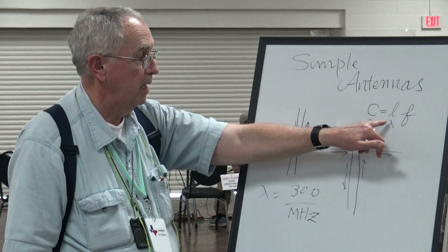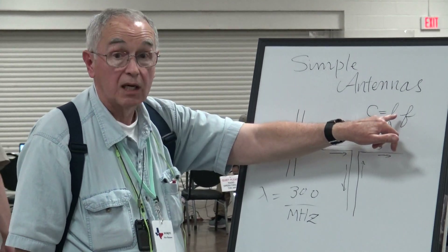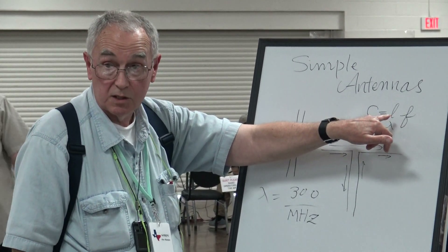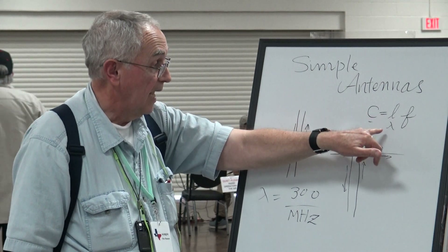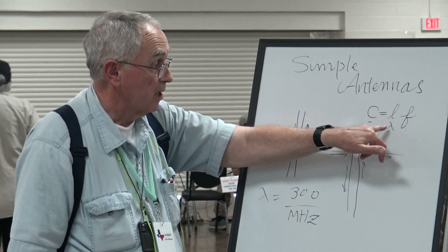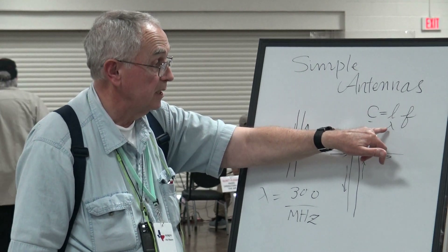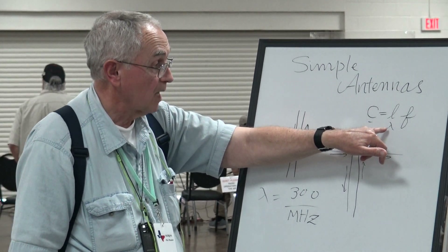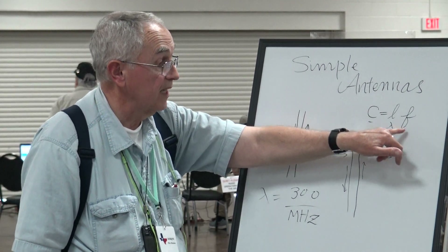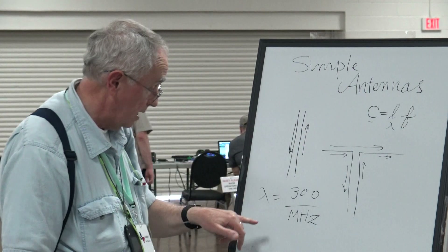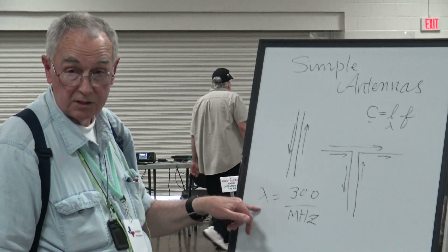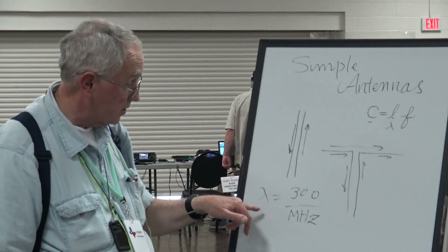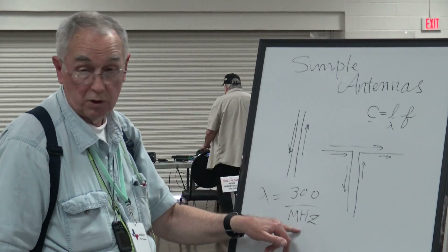Do you know the speed of light? It's a constant — it's the speed limit of the universe. And it corresponds to the product of wavelength times frequency. You can figure out the wavelength frequency, and it comes out to about 300 meters per megahertz.